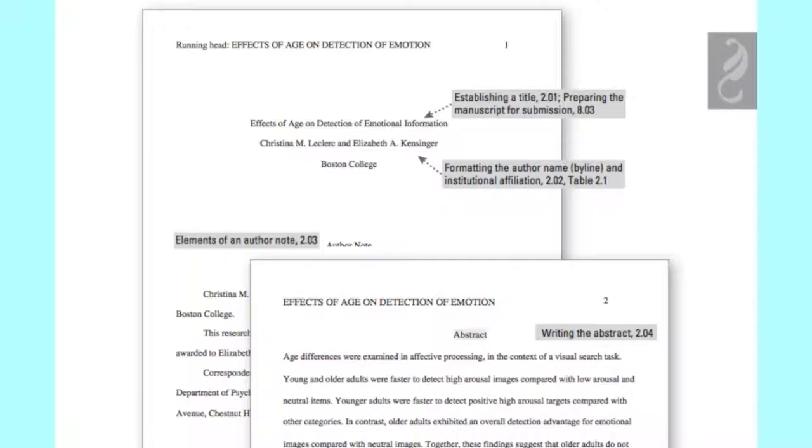As students, you won't typically need an author note, so we're going to skip over that section, but if you need that information, it's on page 24 of your APA handbook.